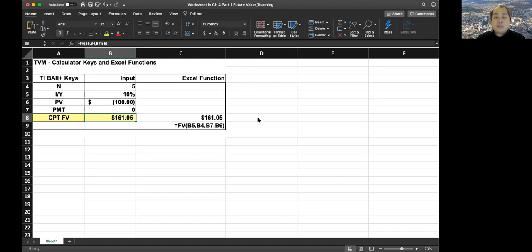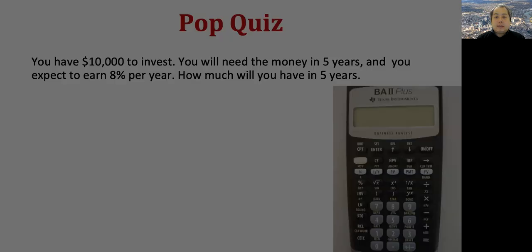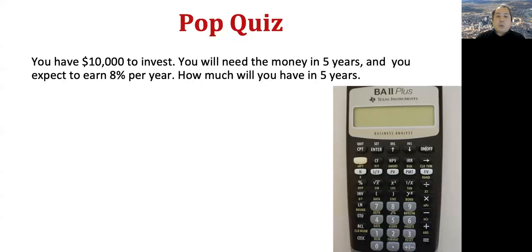Now we have a top quiz. You have $10,000 to invest. You will need the money in five years, and you expect to earn 8%. How much will you have in five years? You need to find the future value with 8% interest, five years later, with $10,000 present value.